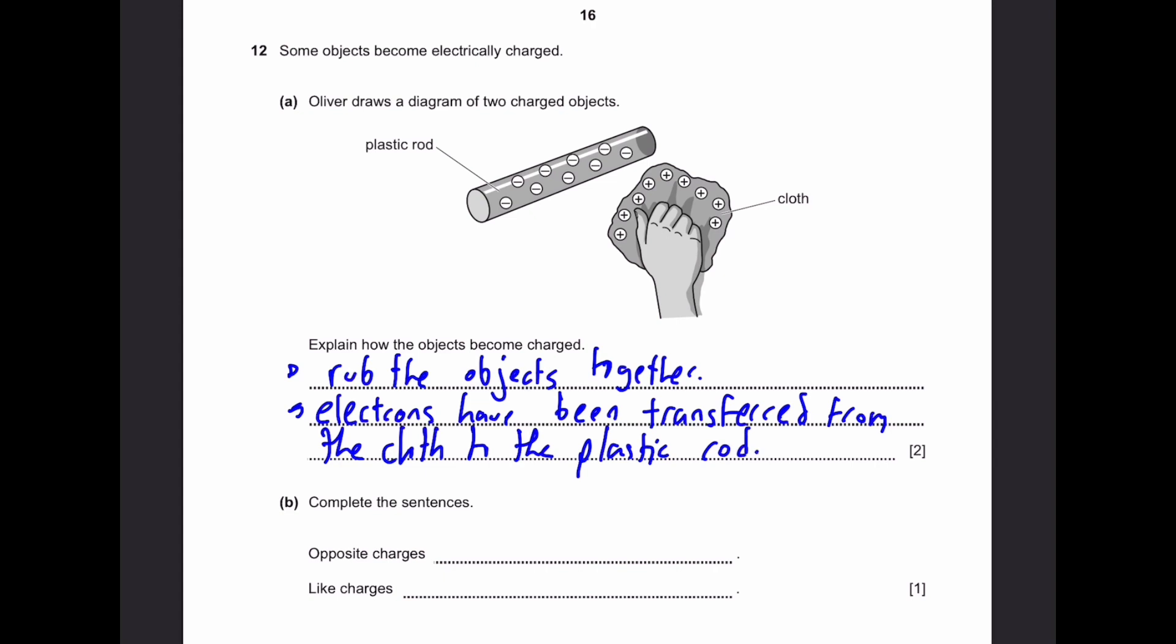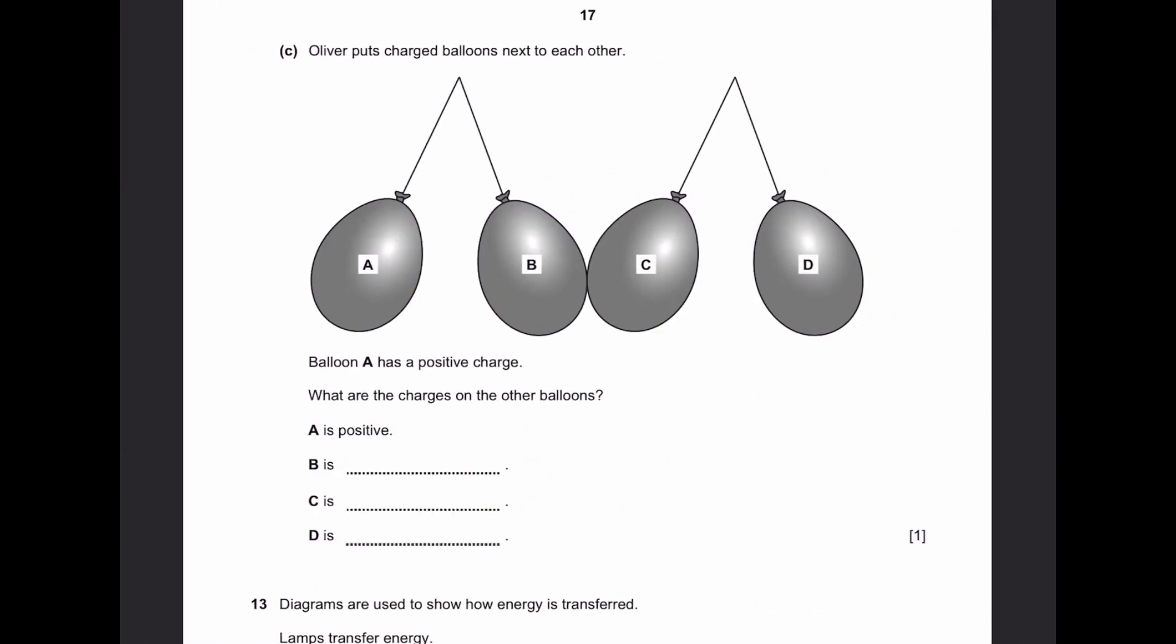Part B. Complete the sentence. Opposite charges attract. Like charges repel. This is very easy, basic knowledge. Part C. Oliver put some charged balloons next to each other. Balloon A has a positive charge. What are the charges of the other balloons? A is positive. Now, B is? If A and B repel, that means they are the same like charges, which is also positive. Now, if B and C attract, that means they are opposite charges, which means C is negative. And if C and D repel, that means they are like charges, which means D is also negative. That's the answer.